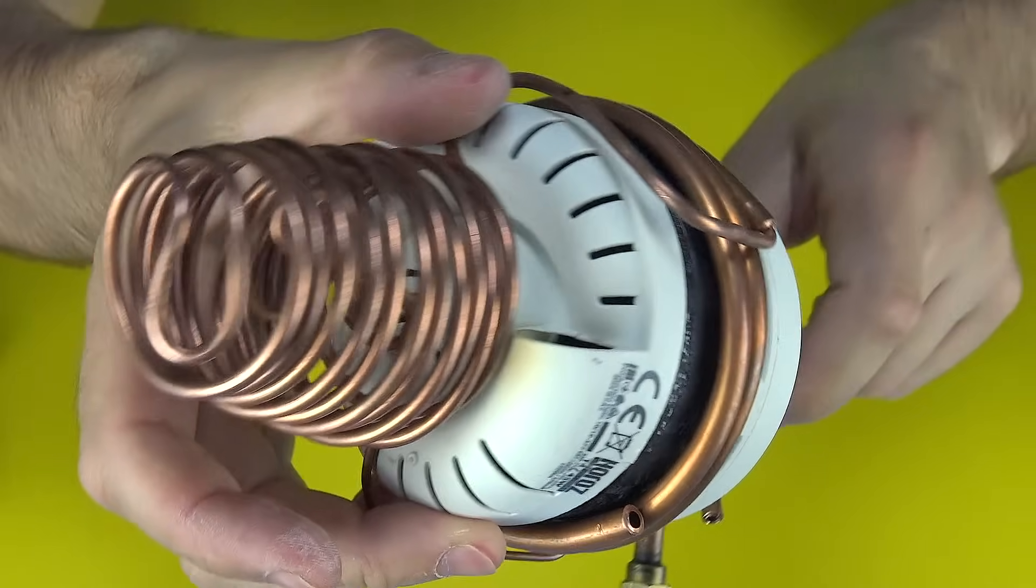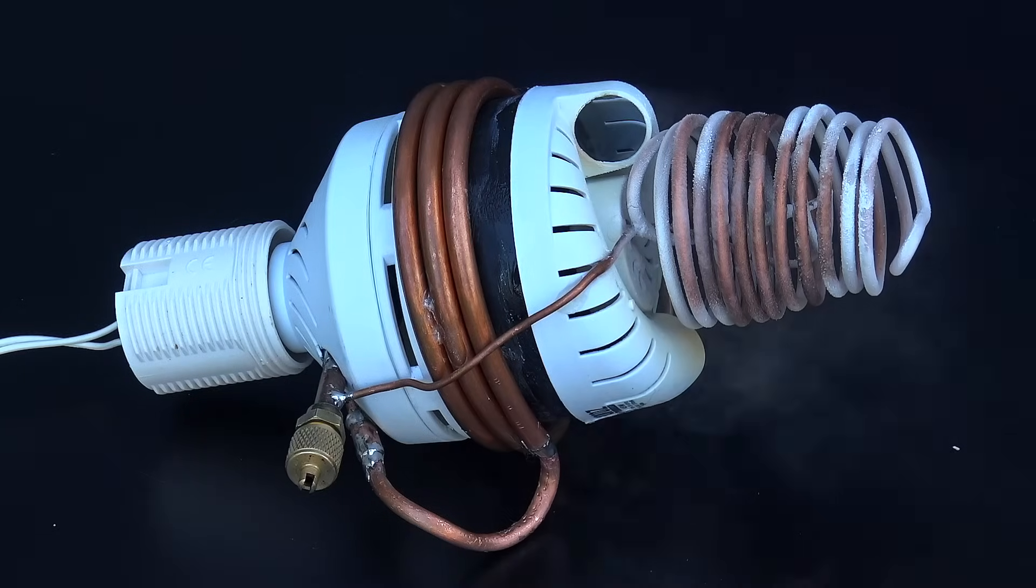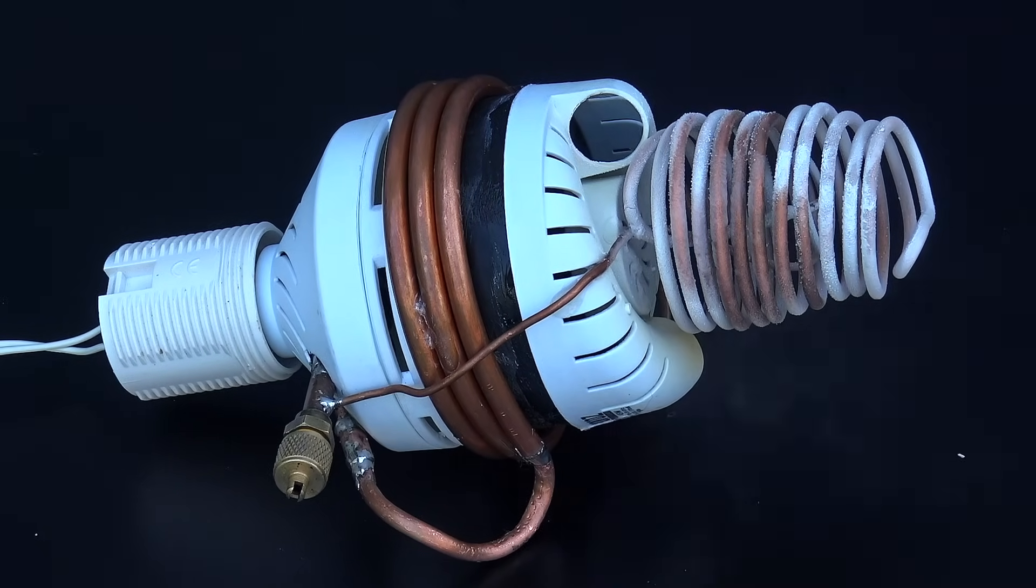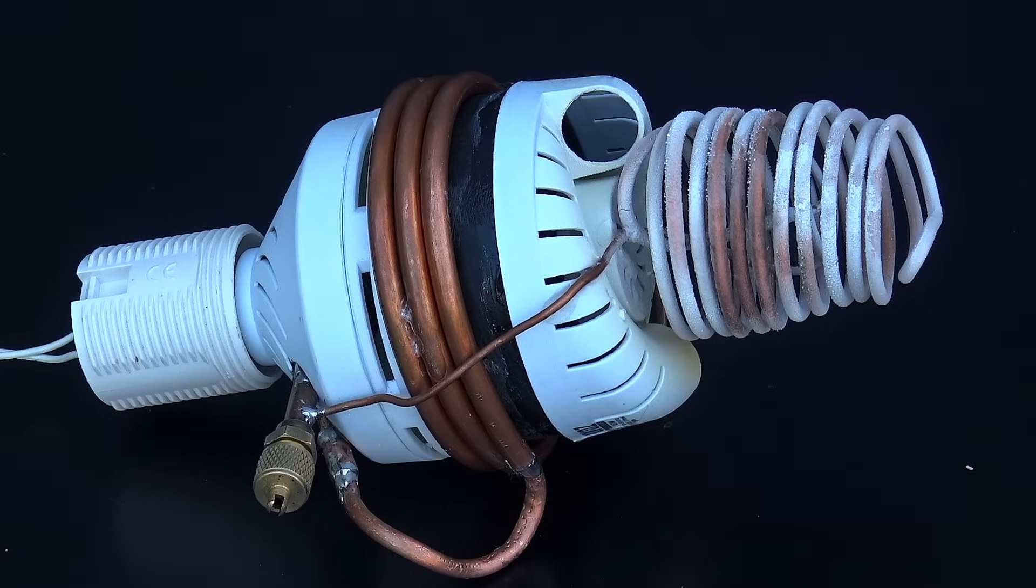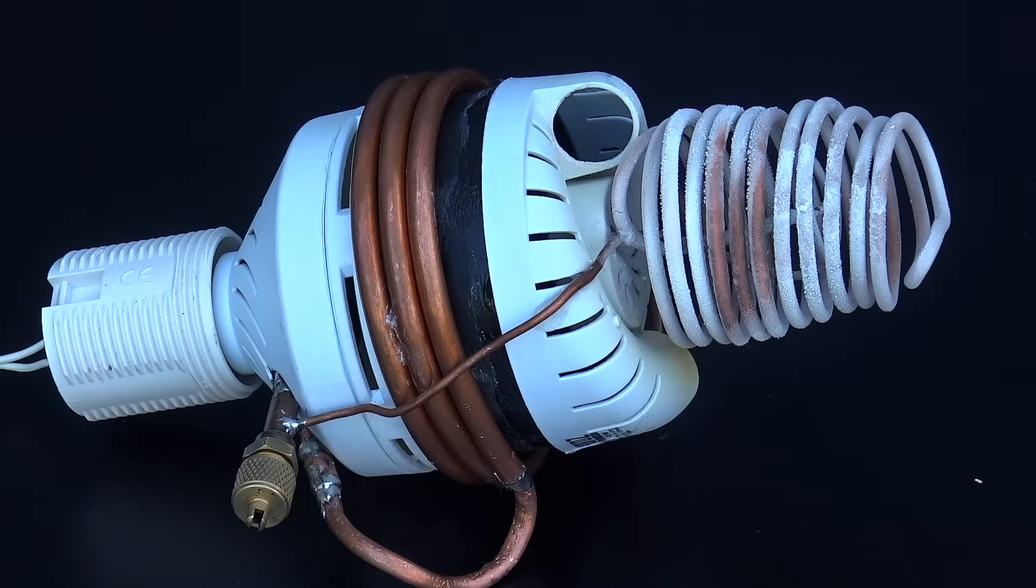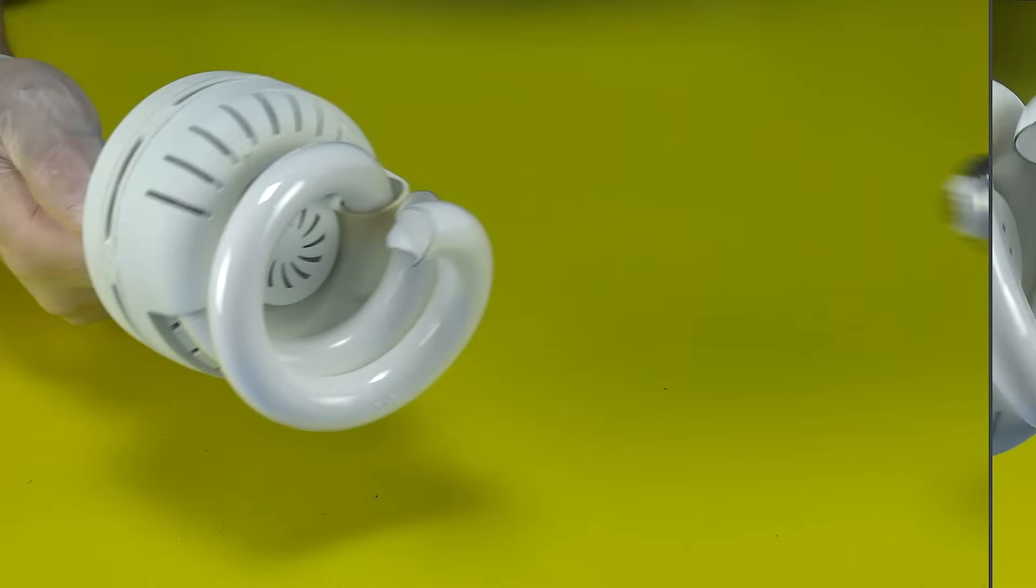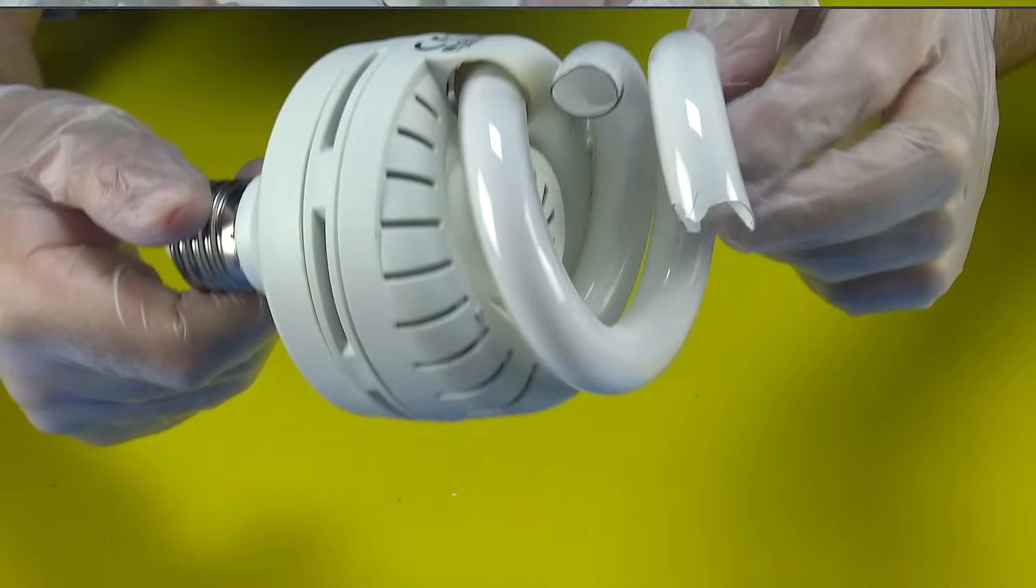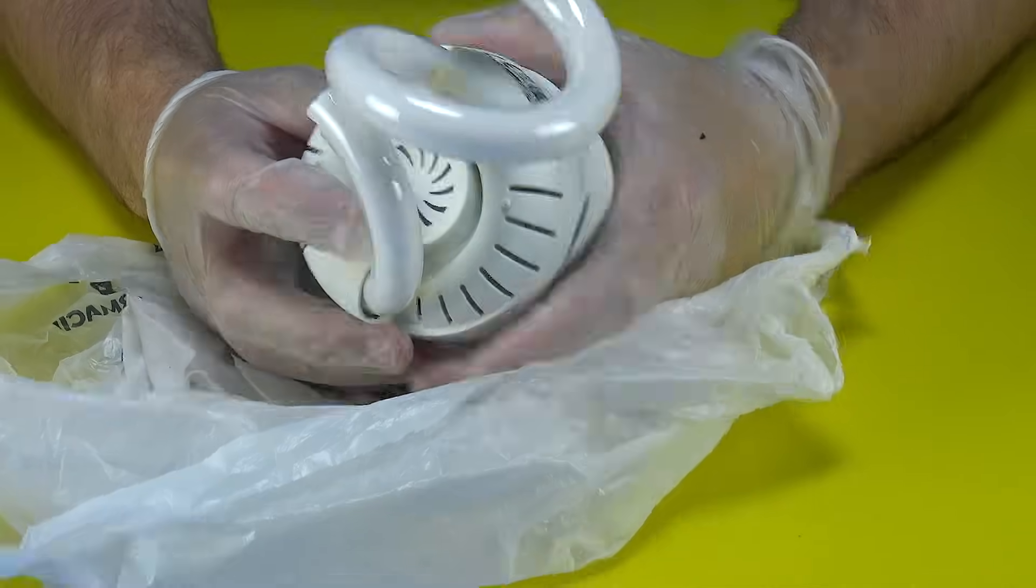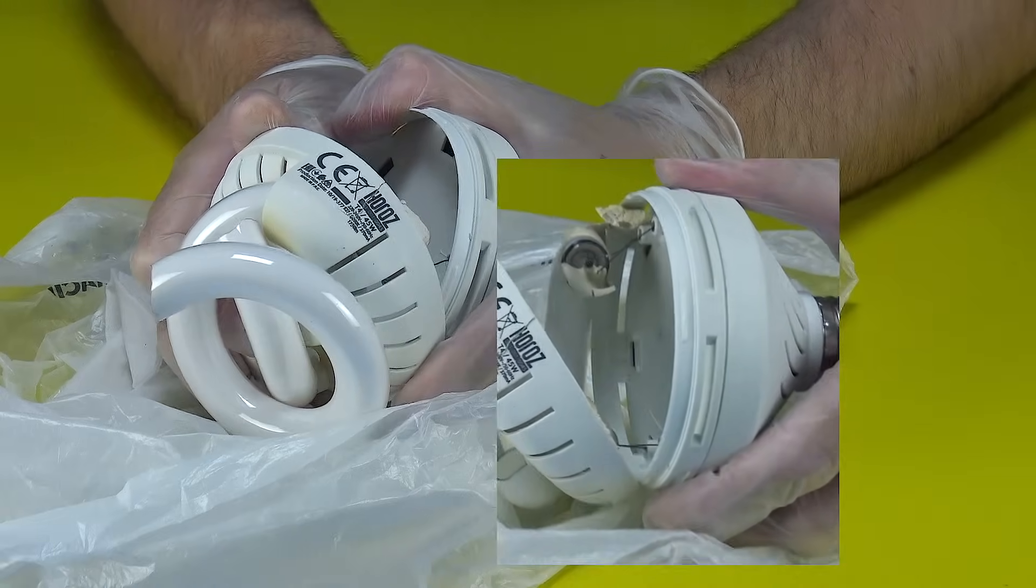Hey there, friends. On a hot summer day, you can turn a regular fluorescent lamp into a DIY air conditioner that cools down to an incredible minus 35 degrees Celsius. Instead of throwing away a broken fluorescent lamp, I decided to give it a second life and turn it into something truly useful.